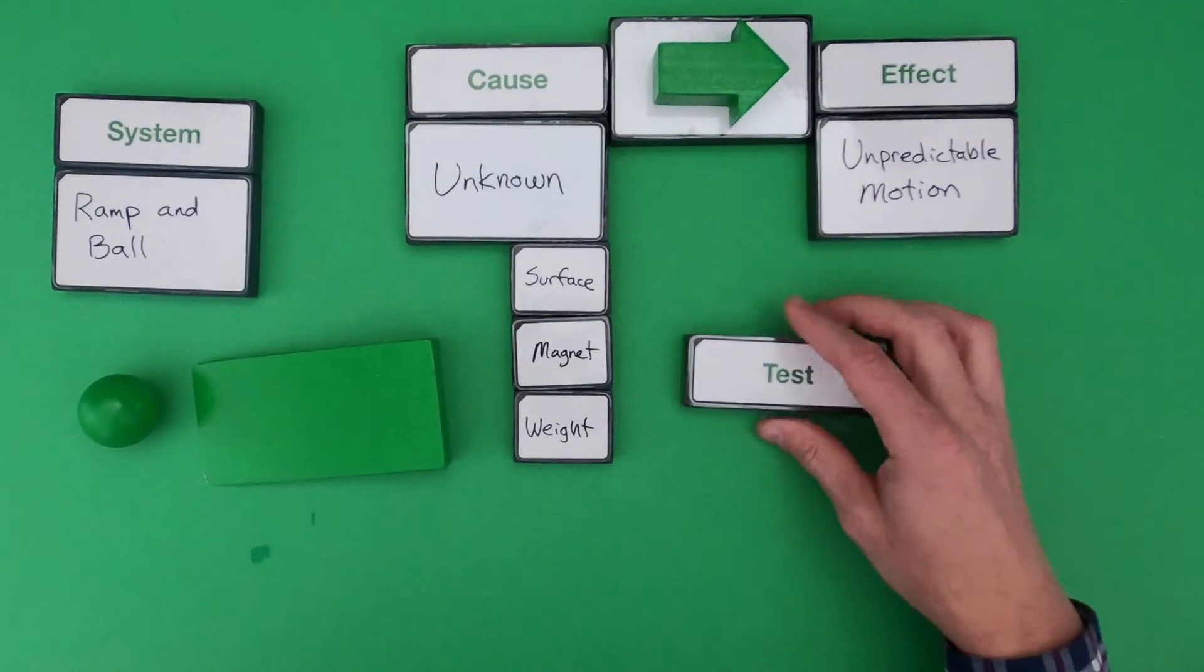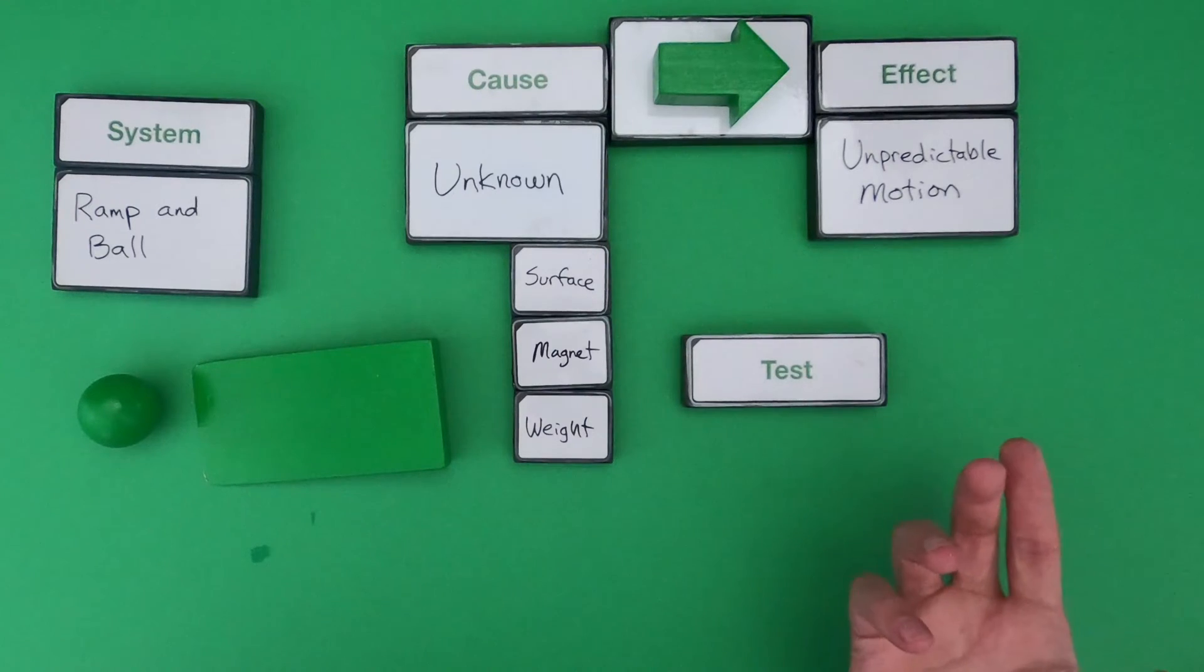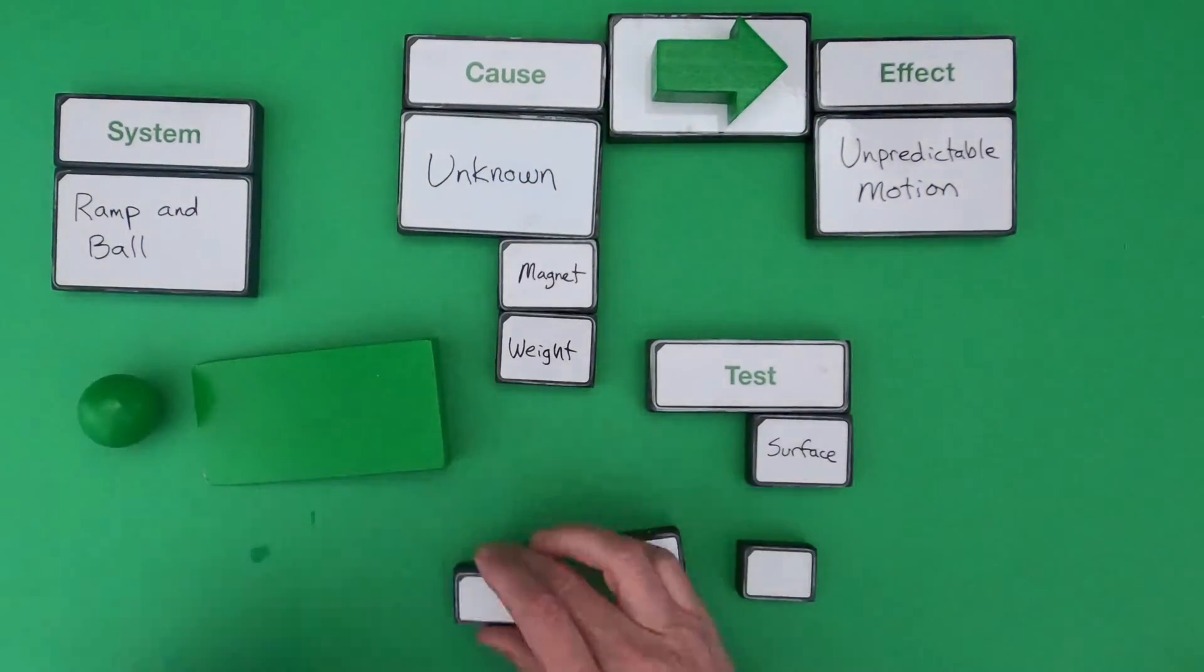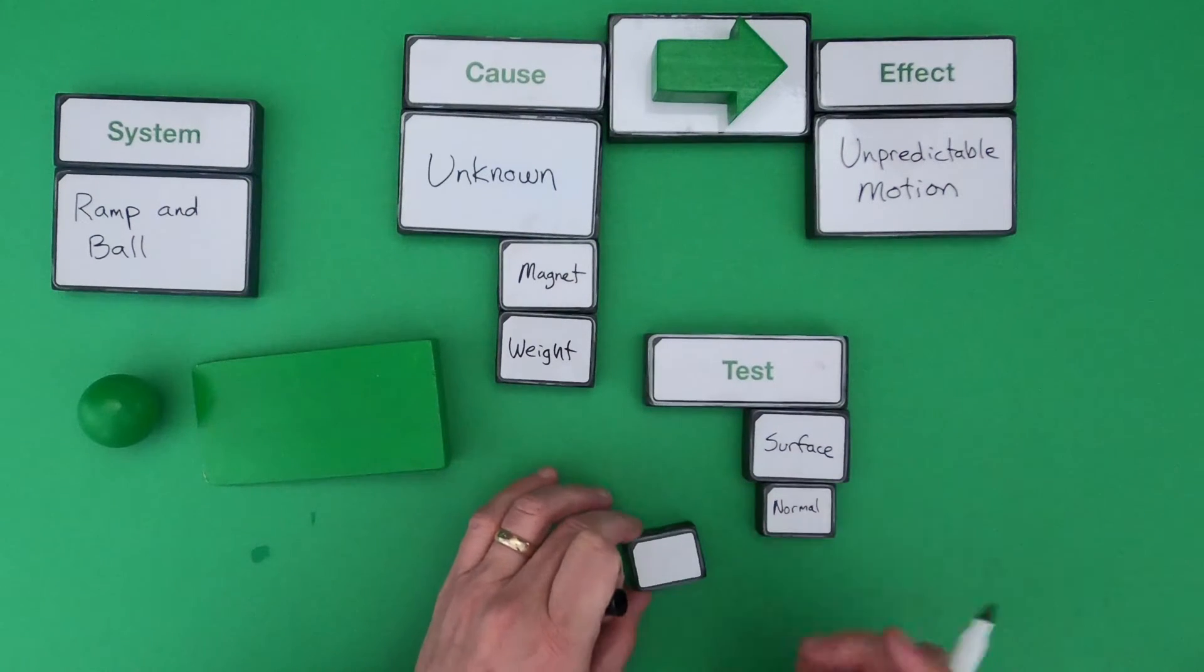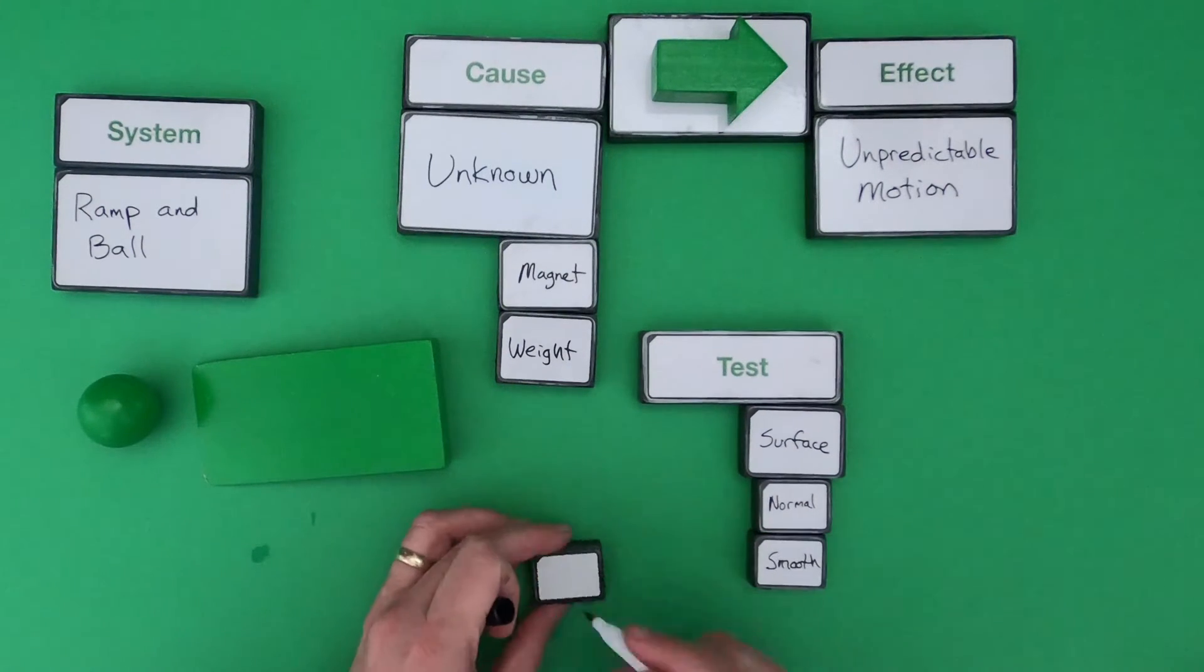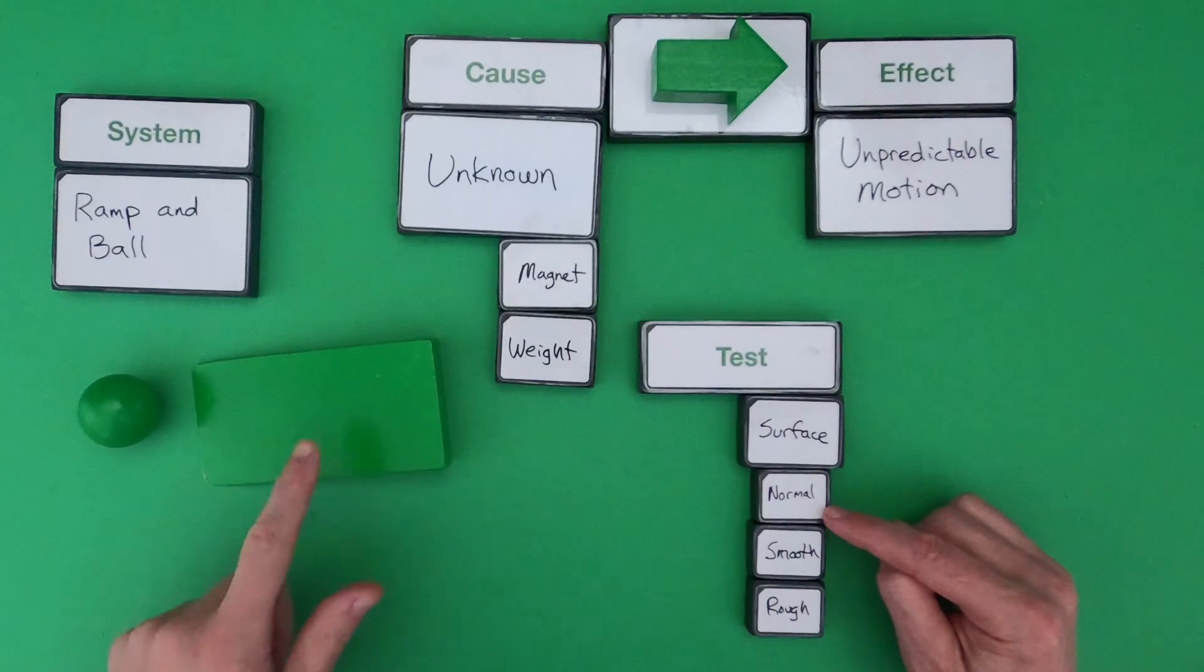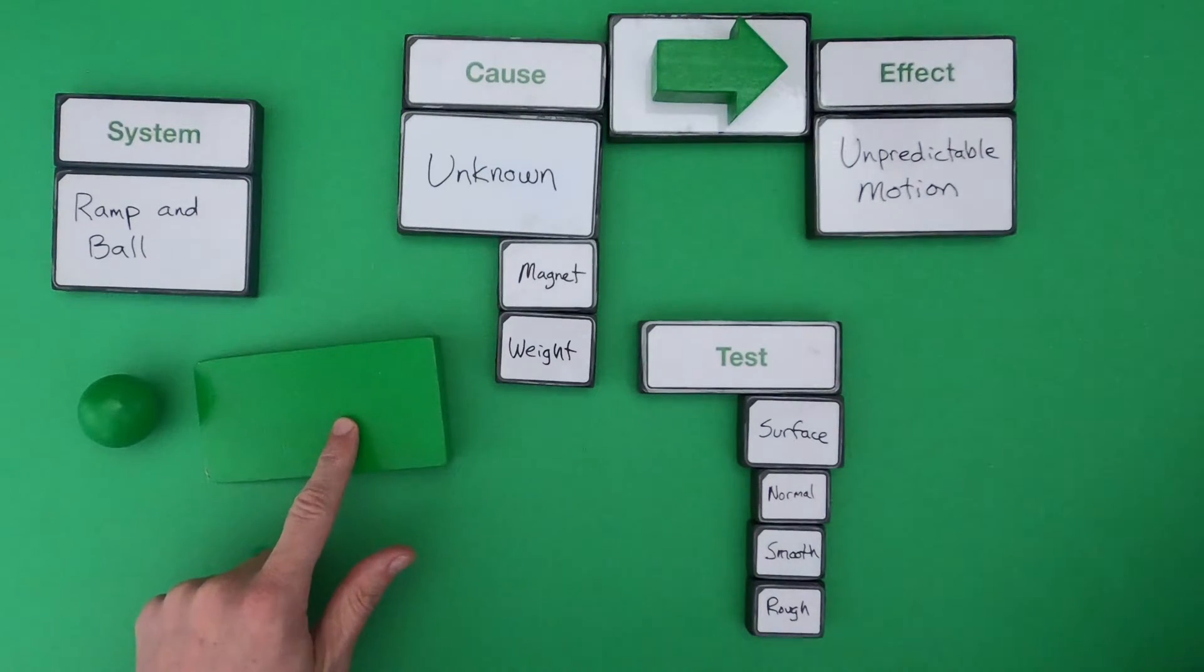So what we have to do now is develop a test. How do we develop a test to figure out what might be causing this unpredictable motion? So let me start by looking at the surface. So what I've done here is determined that maybe we test different surfaces. Maybe we start with the normal surface and test it. Then we do a smooth surface.